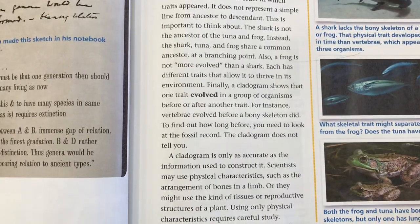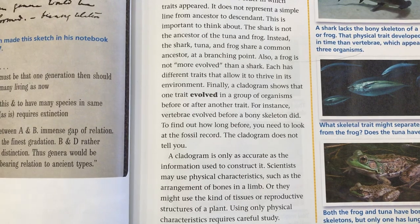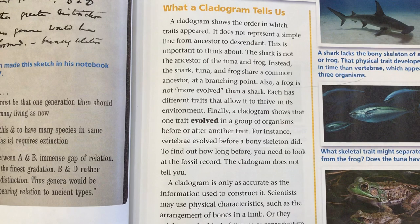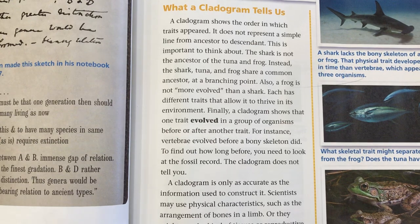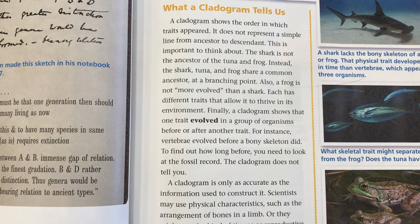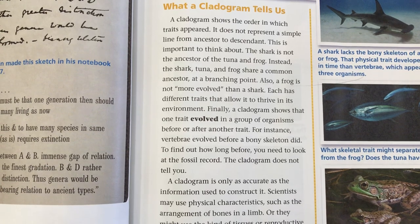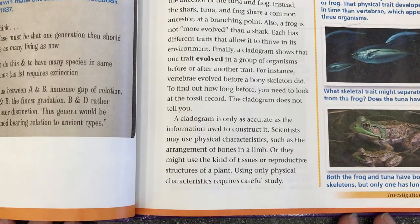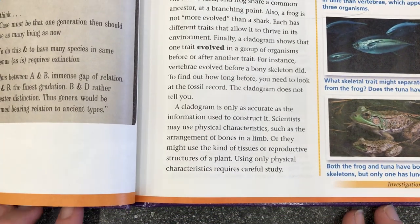What a cladogram tells us: a cladogram shows the order in which traits appeared. It does not represent a simple line from ancestor to descendant. The shark is not the ancestor of the tuna and frog. Instead, the shark, tuna, and frog share a common ancestor at a branching point. Also, a frog is not more evolved than a shark — each has different traits that allow it to thrive in its environment. Finally, a cladogram shows that one trait evolved before or after another trait. For instance, vertebrae evolved before a bony skeleton did. To find out how long before, you need to look at the fossil record — the cladogram does not tell you.